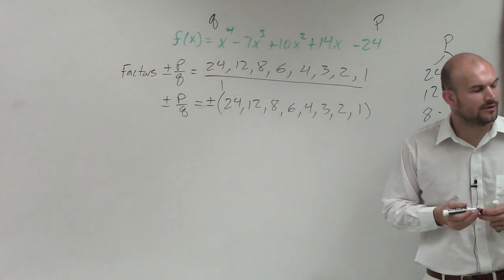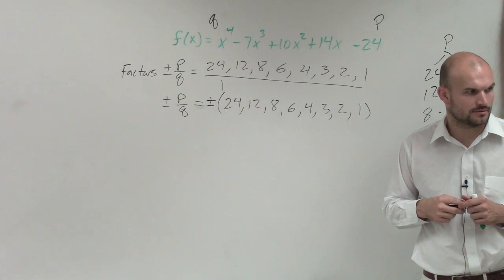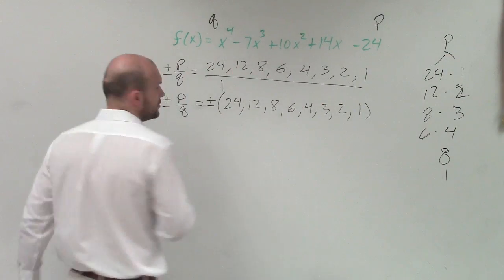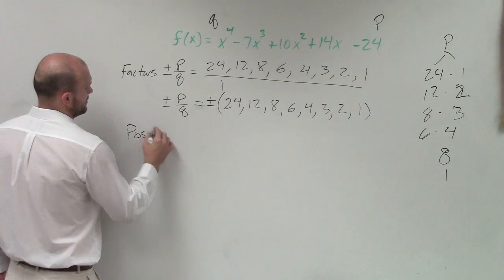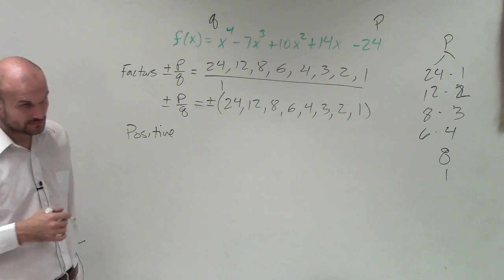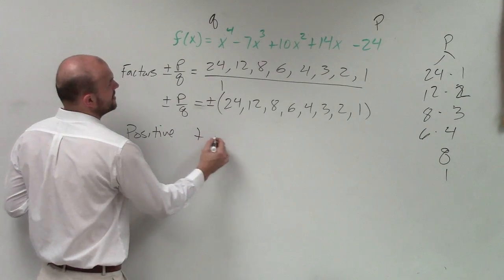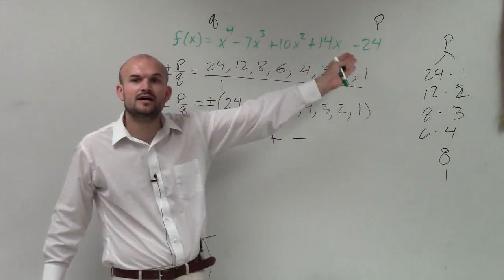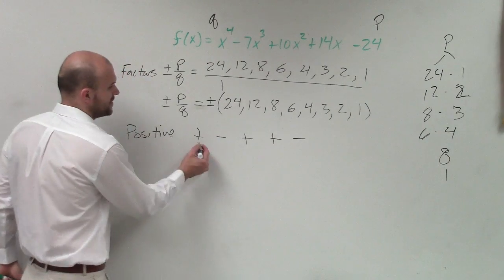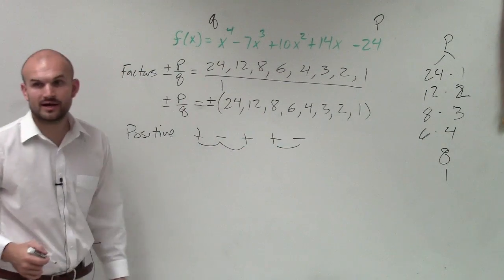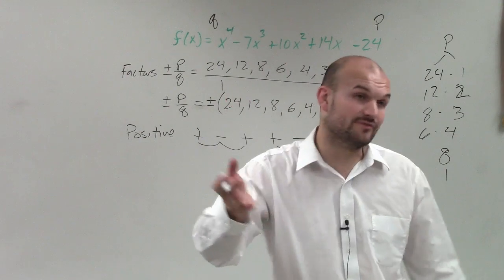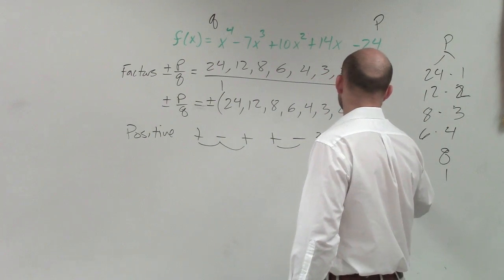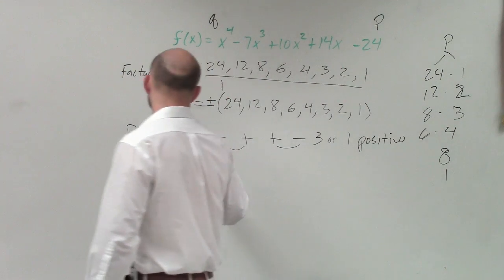So now let's go ahead and determine the positive real and negative zeros. When I take a look at the positive, I'll just take out the signs. It goes positive, negative, positive, positive, negative. All I did was take the sign of each one of my monomials and brought it down. Therefore, you can see I have three sign changes. So three minus an even number — one even number is two, so three minus two would be one. Therefore, I have three or one positive real zero.